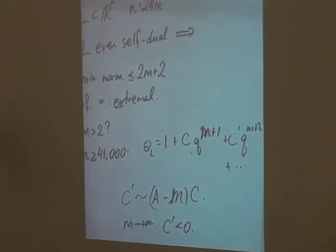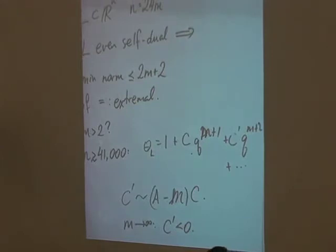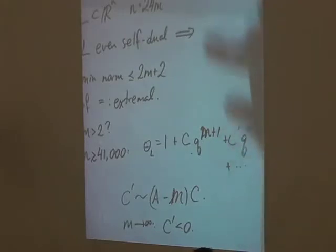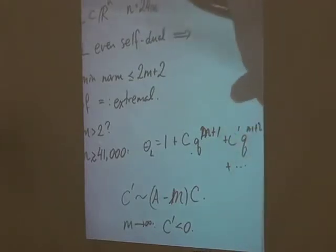So if m is large enough, c' is less than zero. Of course the theta function cannot have a negative coefficient, because there can't be a negative number of vectors of a given length, and so that proves that eventually you're going to run out of such lattices. But there's a long distance between 48 and 41,000, and we don't know when that happens. In particular, there is already a big open question about what happens at m=3 — this first case where we don't know whether there exists an extremal even unimodular lattice of that rank.